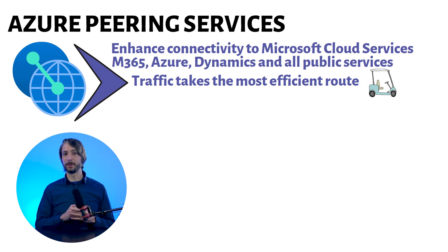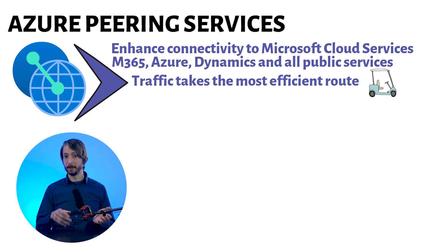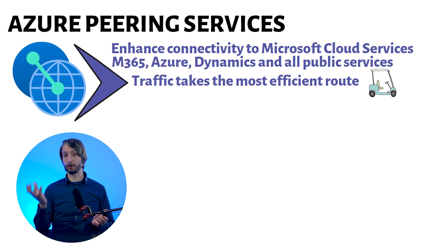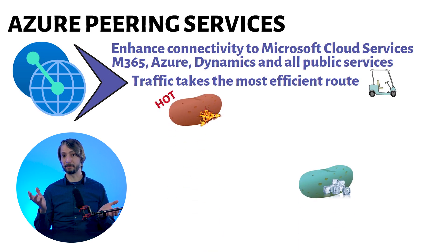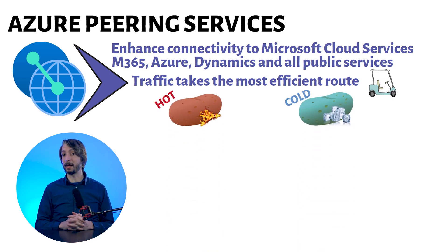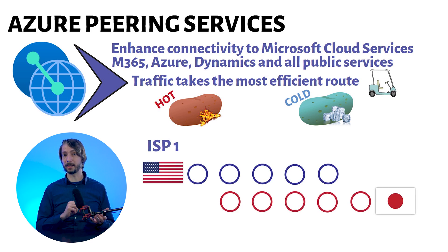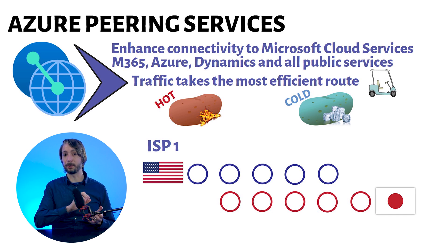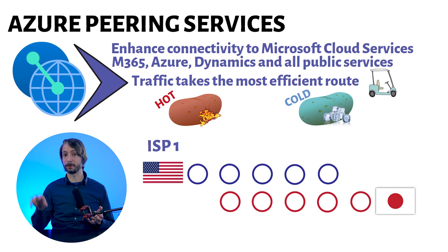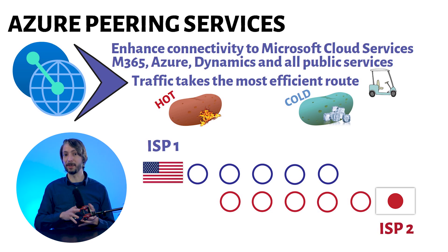Now we will move to defining our favorite vegetable, namely the potato. We have two types of potato: the hot potato and the cold potato. So imagine we have two ISPs, both of which have worldwide networks. The first ISP has their headquarters in the US, and their network spans all the way to Japan. The second ISP has their headquarters in Japan, and their network also spans all the way across the US.